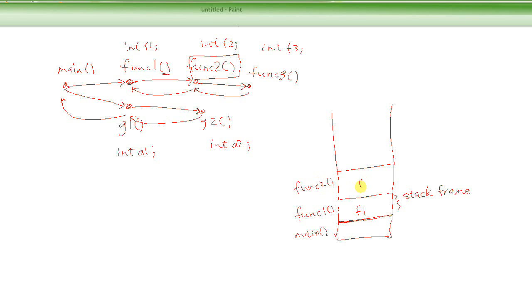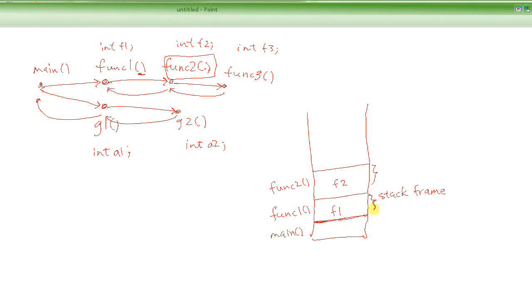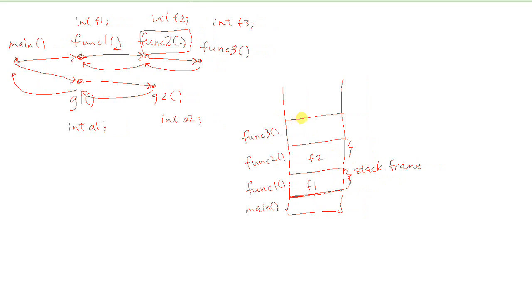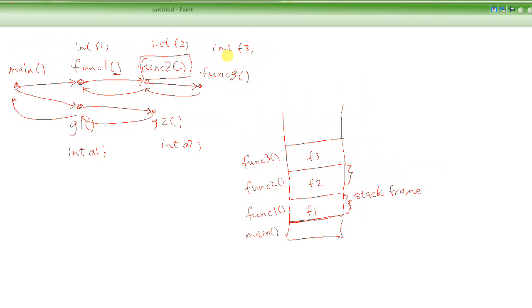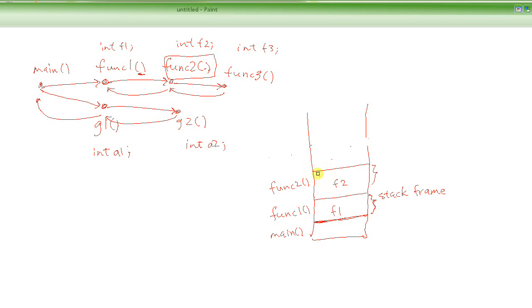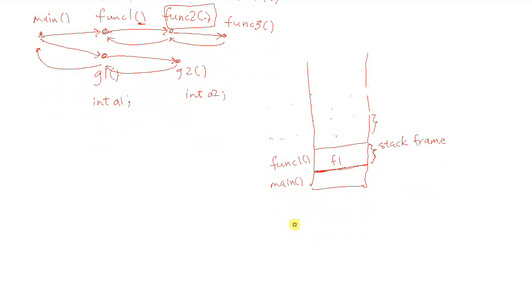When func3 returns, that memory is freed up — as if it was never used before. Then func2 executes and finishes, and then func1 finishes. When func1 finishes, we are back to main. When main function finishes, the program ends — so main never finishes until the end of the program.